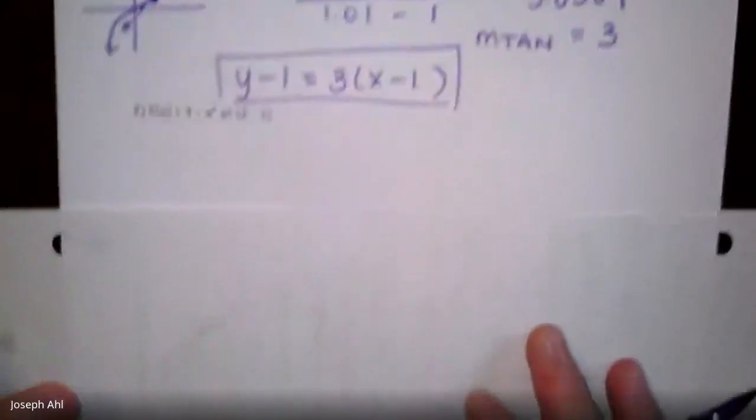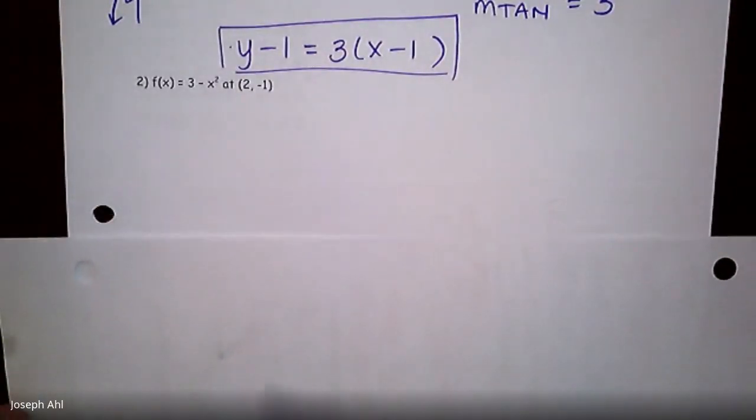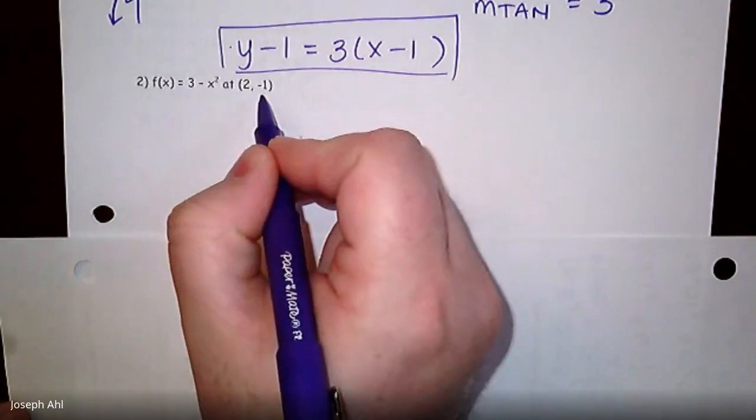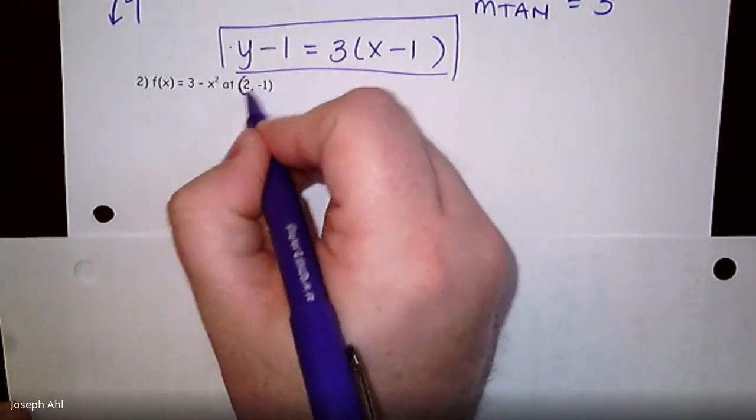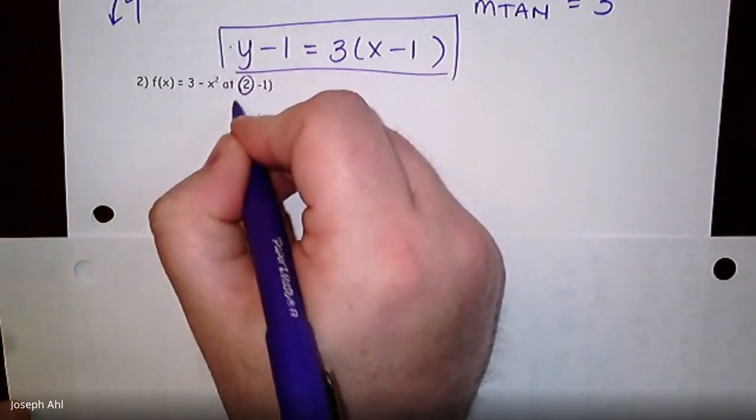So the end goal is once you find the slope of the tangent line, then write the equation of the tangent line as well. We'll do two more just like it. I'll let you try the last one on your own. The next one, f of x equals 3 minus x squared. We want to find the equation at the point 2 negative 1. So at x equals 2, that's what we're trying to find the tangent line at.